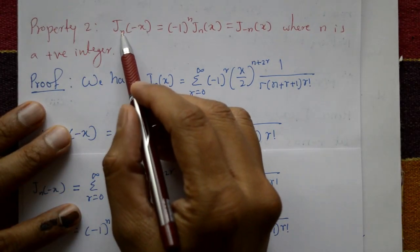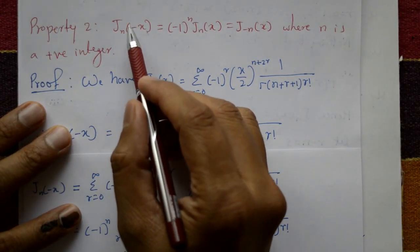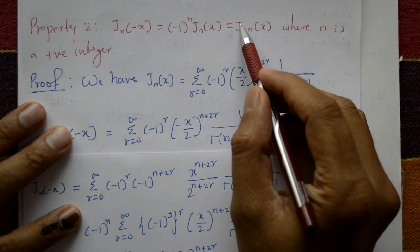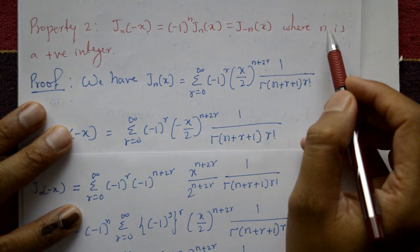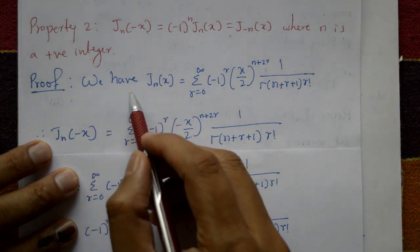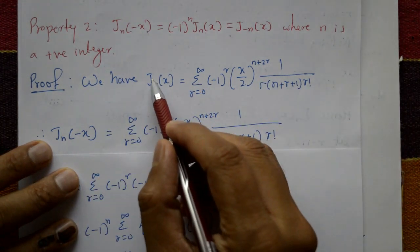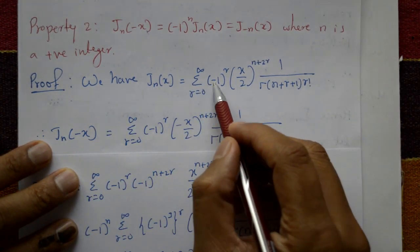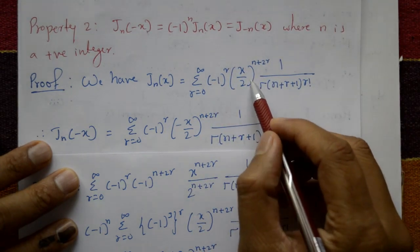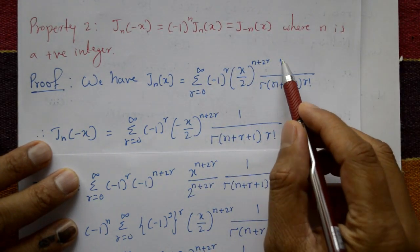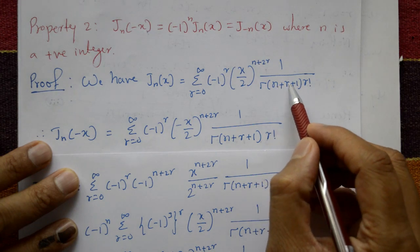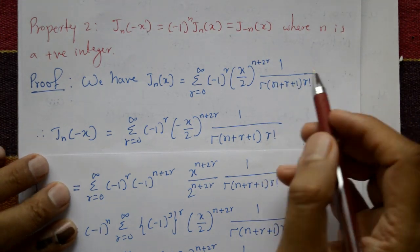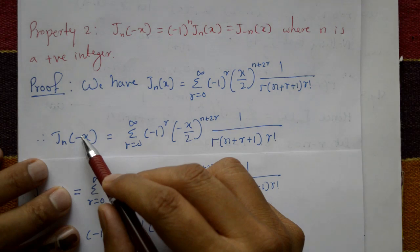Property 2: j_n of minus x is equal to minus 1 raised to n, times j_n of x — or equivalently j_{-n} of x — where n is a positive integer. We have Bessel's function j_n of x equal to summation r equals 0 to infinity of minus 1 raised to r, times x over 2 raised to n plus 2r, into 1 upon gamma of n plus r plus 1, into r factorial. Now put x equal to minus x.